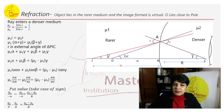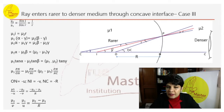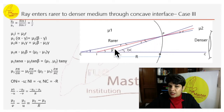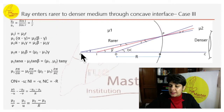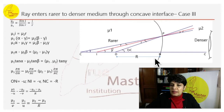Case 3: ray enters from rarer to denser medium through a concave interface. The difference here is that the spherical surface is concave. The object is placed here and the image is formed on this side. C is the center of curvature; u is from O to the pole, v is from the pole to I, and R is from the pole to C.